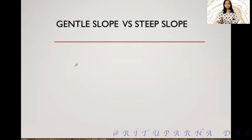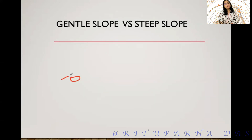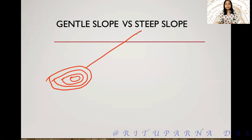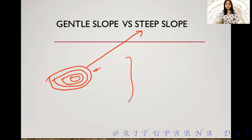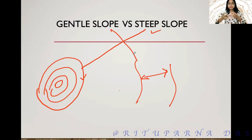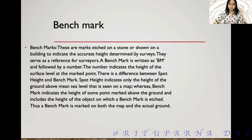With the help of contour lines we can easily find out whether it is a gentle slope or a steep slope. For example, if contour lines are very closely located, that indicates a steep slope — as shown in a diagram of a conical hill. If contour lines are not closely spaced and there is a wide gap between them, that indicates a gentle slope.